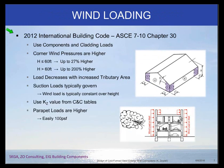For wind loading on exterior walls, we are using ASCE 7-10 — whether you're under the 2012 IBC, the 2015 IBC, or out here in California under the 2013 CBC or the upcoming 2016 CBC, we're all still on ASCE 7-10. Chapter 30 covers components and cladding, and those are the loads we're using — not the main wind force resistance system loads.